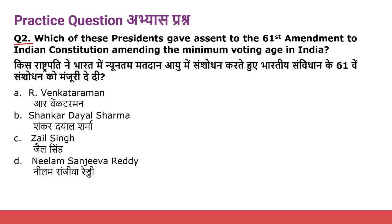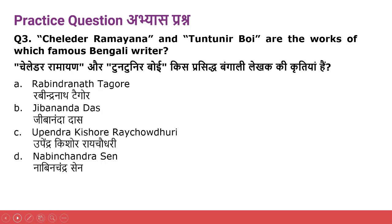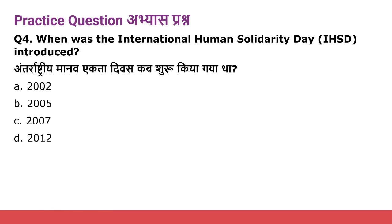Practice question two: Which of these presidents gave assent to the 61st Amendment to the Indian Constitution amending the minimum voting age in India? Option A: R. Venkataraman. Option B: Shankar Dayal Sharma. Option C: Zail Singh. Option D: Neelam Sanjeev Reddy. Question three: Chele Der Ramayana and Tuntunir Boi are the works of which famous Bengali writer? Option A: Rabindranath Tagore. Option B: Jibananda Das. Option C: Upendra Kishore Ray Chaudhary. Option D: Nabeen Chandrasen.